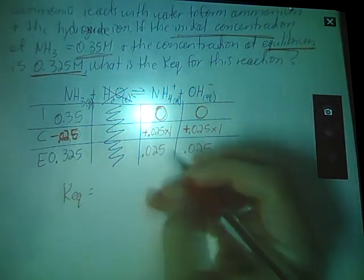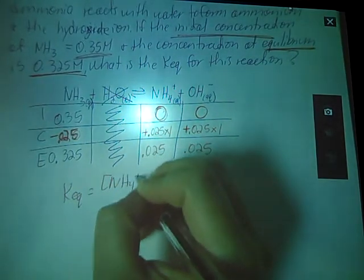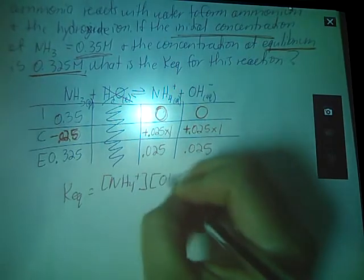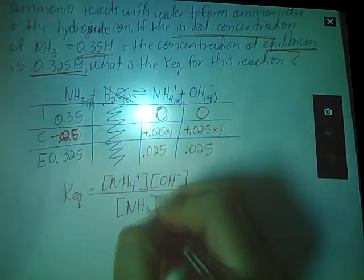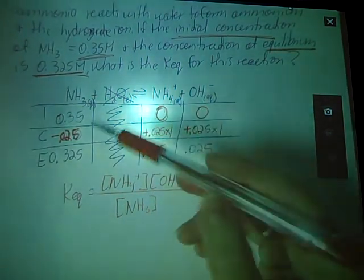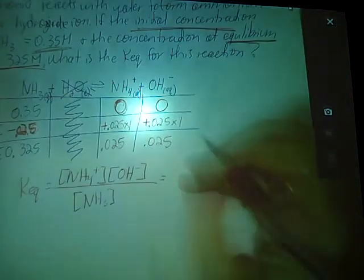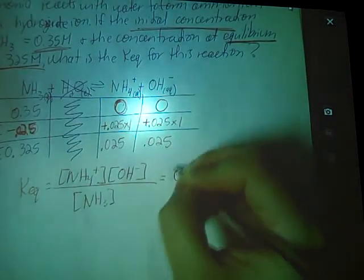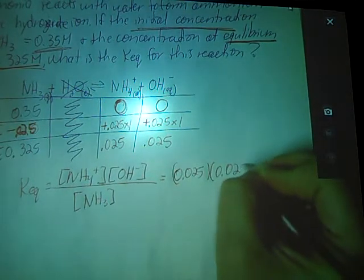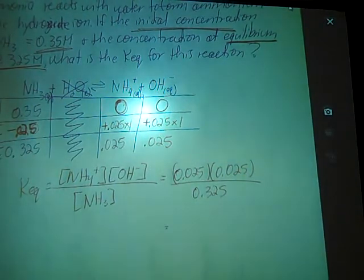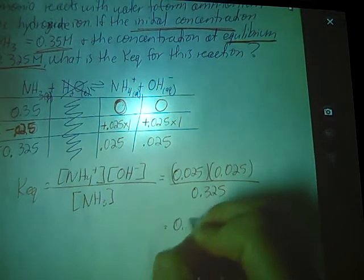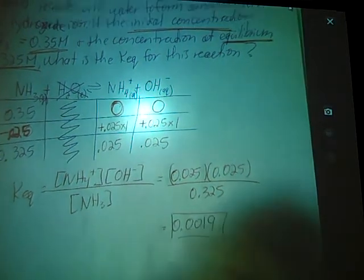And now we can find our KEQ. KEQ equals products divided by reactants. The only reactant we care about is our ammonia because water, pure liquid, does not go in a KEQ. So 0.025 times 0.025 divided by 0.325, 0.0019 for my KEQ.